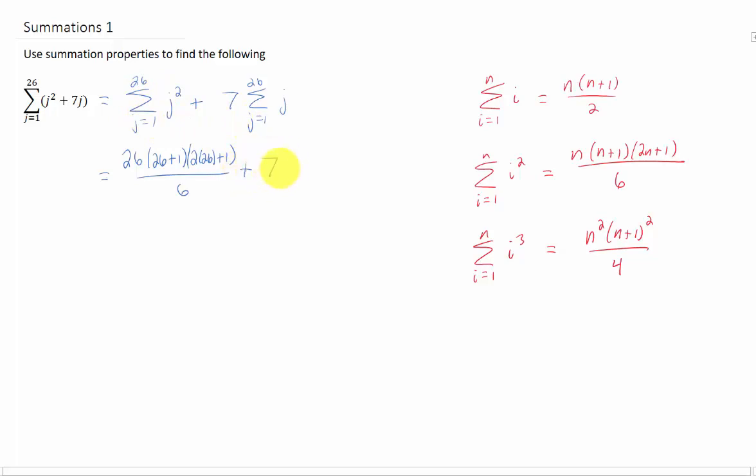Now, as far as the second sum goes, we have this 7 outside, and what is the sum of j from j equals 1 to 26? Well, it's this one right here using n equals 26 again. This formula tells us that the sum is going to add up to 26 times 26 plus 1 divided by 2. Now, we can simplify this, of course.